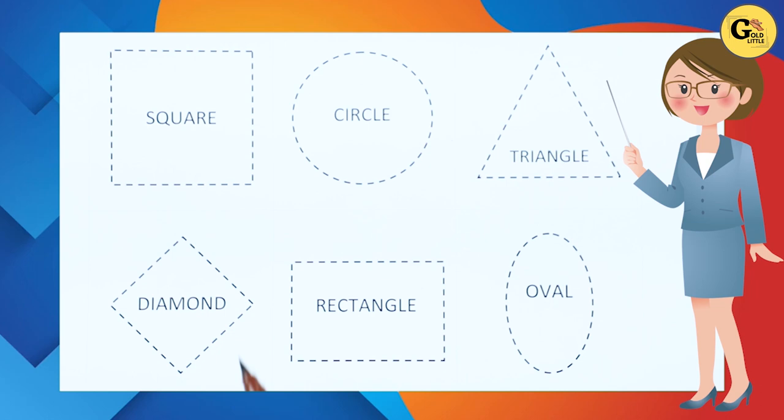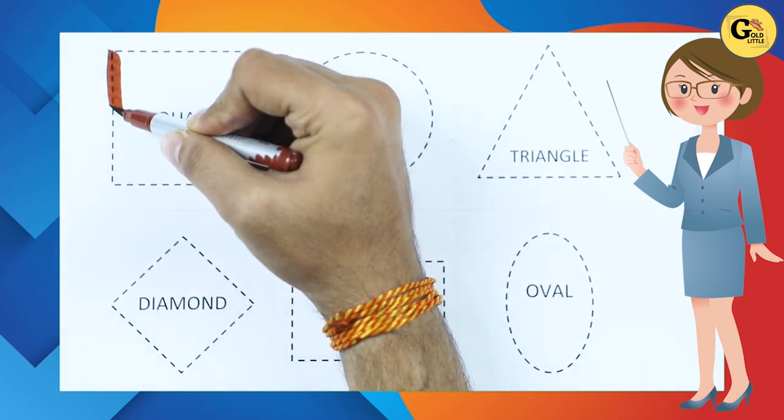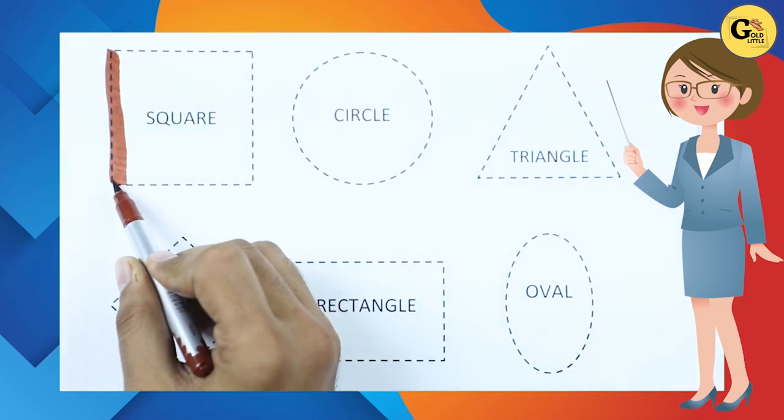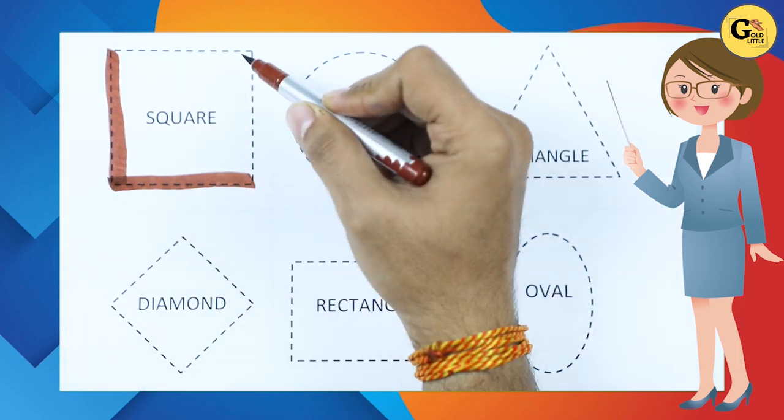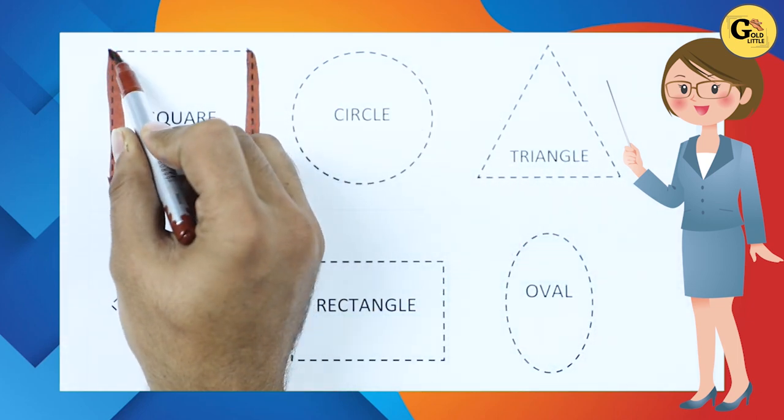It's a square. We draw square with brown color. Square.